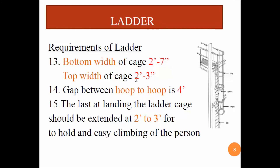The bottom width of the cage must be 2 feet 7 inches and the top width must be 2 feet 3 inches — as you can see in the figure, the width at the bottom is greater compared to the top. The gap between hoop to hoop must be 4 feet. At the landing, the ladder cage should be extended 2 to 3 feet to allow easy climbing. These are the different specifications you must keep in mind as far as ladders are concerned.